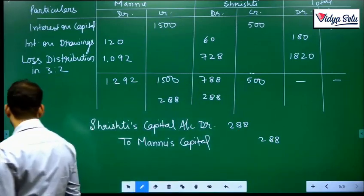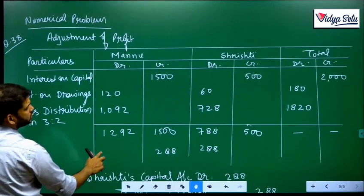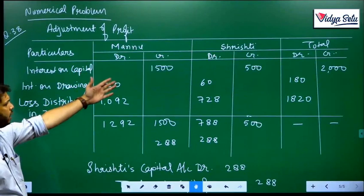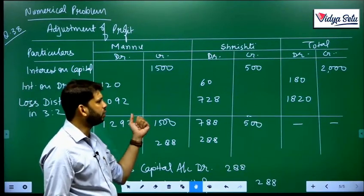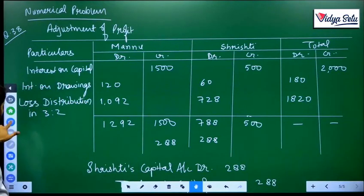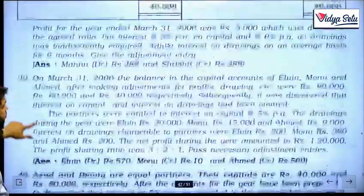The journal entry becomes Srishti's capital account debit 288 to Manu's capital 288. So this is how we have to solve. What we did, we just corrected for our mistake, whatever we had to give, give it back, whatever we have to take, take it back. The extra was only 1,820, let us take back 1,820 in the ratio of 3 to 2.